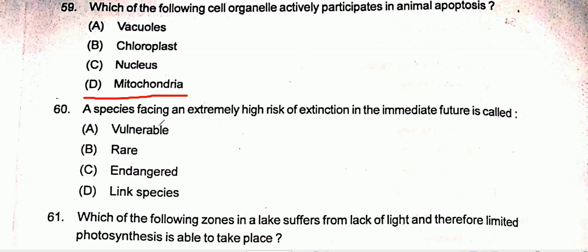Question number 60: A species facing an extremely high risk of extinction in the immediate future is called an endangered species. Option C is the correct one.